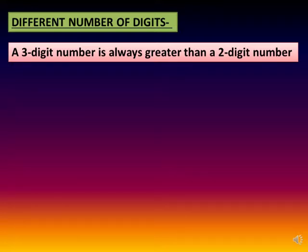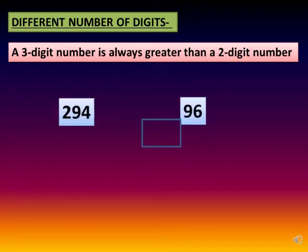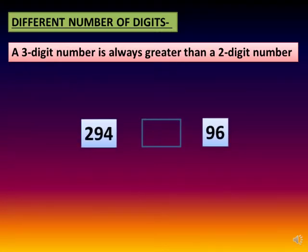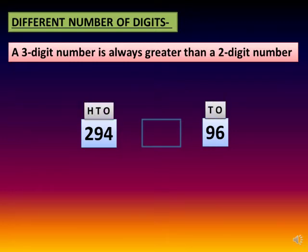Let us compare 294 and 96. 294 is a three digit number and 96 is a two digit number. So according to this rule, 294 is greater than 96.